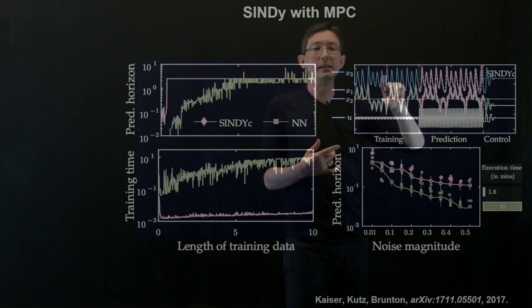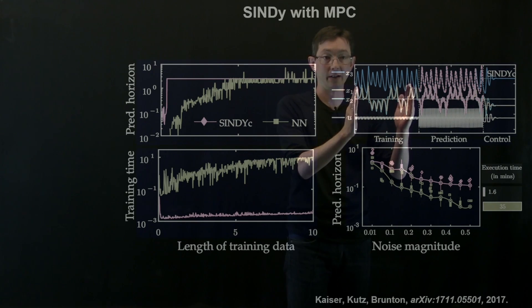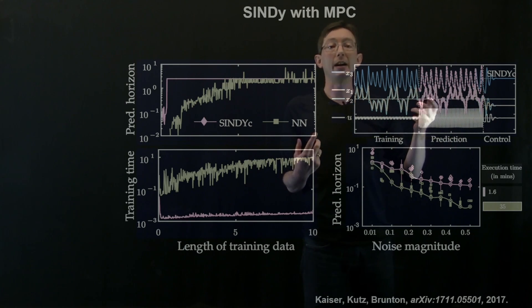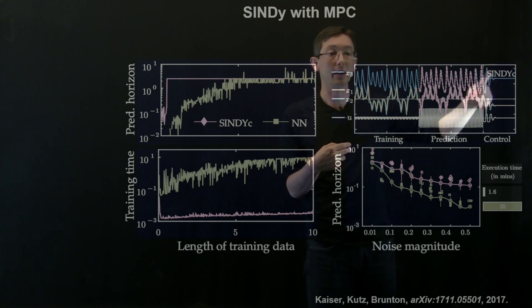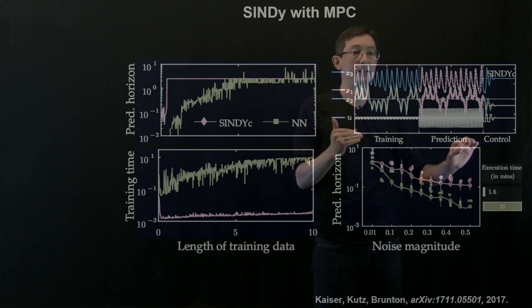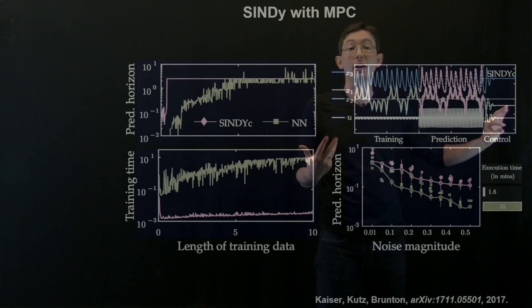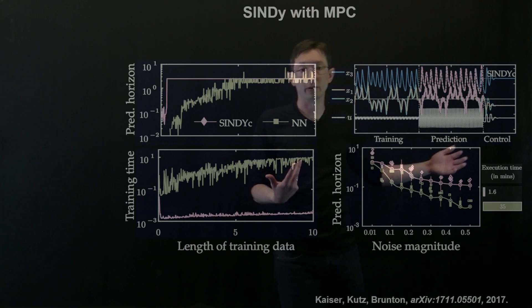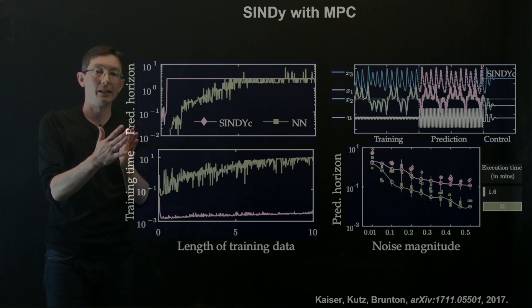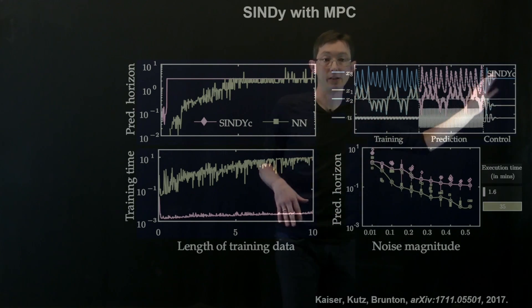What we see in the final phase is three stages: first we train our data on one type of data, then we change the control signal and see how good our prediction is in a second window, and finally we enact our model predictive controller in the last phase to stabilize a fixed point in X, Y, and Z. The SINDYc model very rapidly stabilizes the system even for this non-linear chaotic system using the model predictive controller. SINDYc is able to accurately and aggressively stabilize the system on these values using the model learned during the training period, purely using model predictive control.